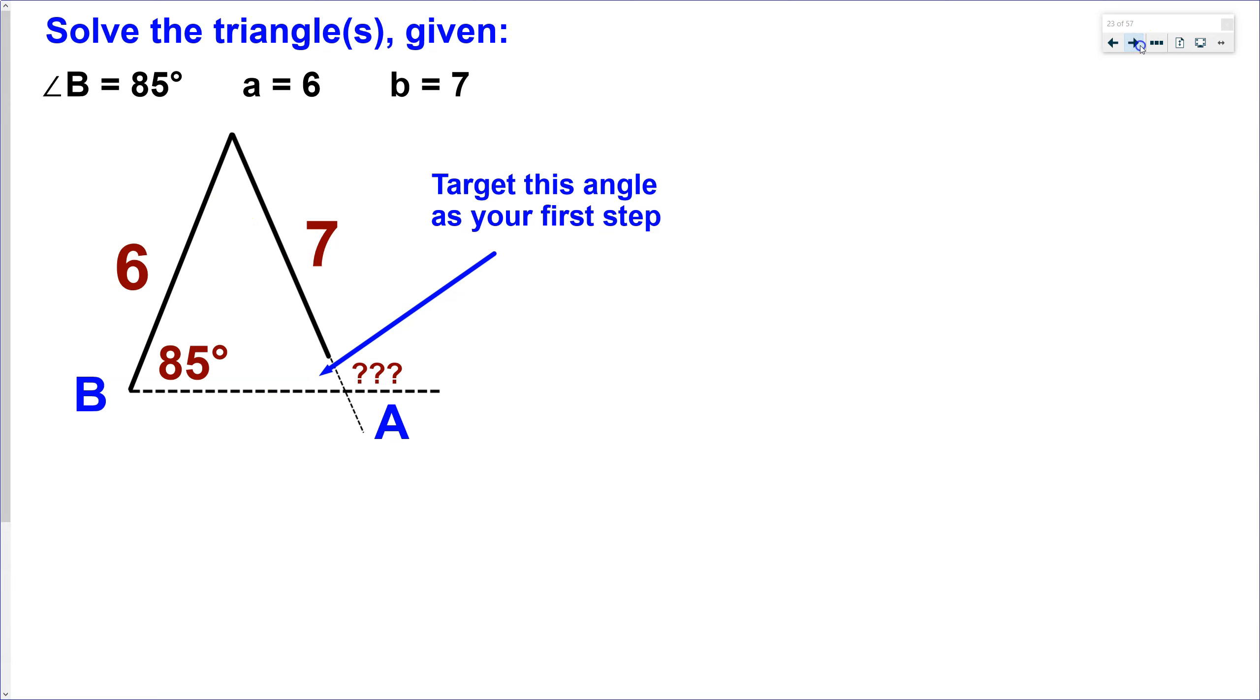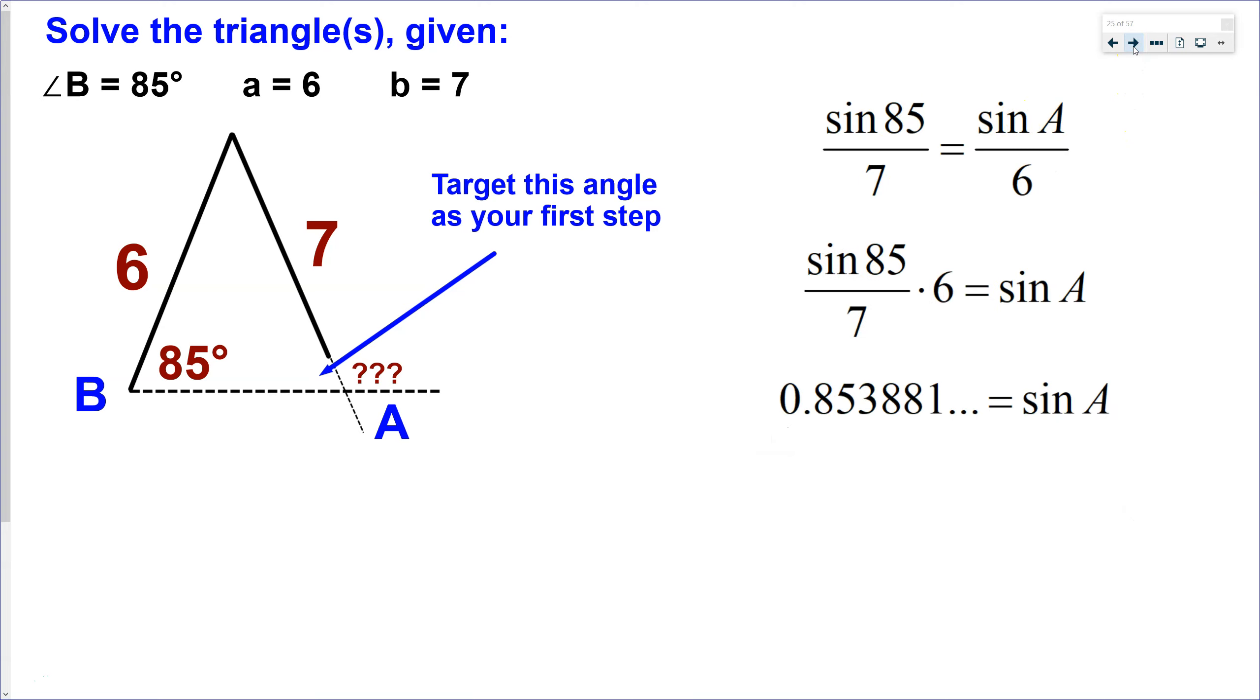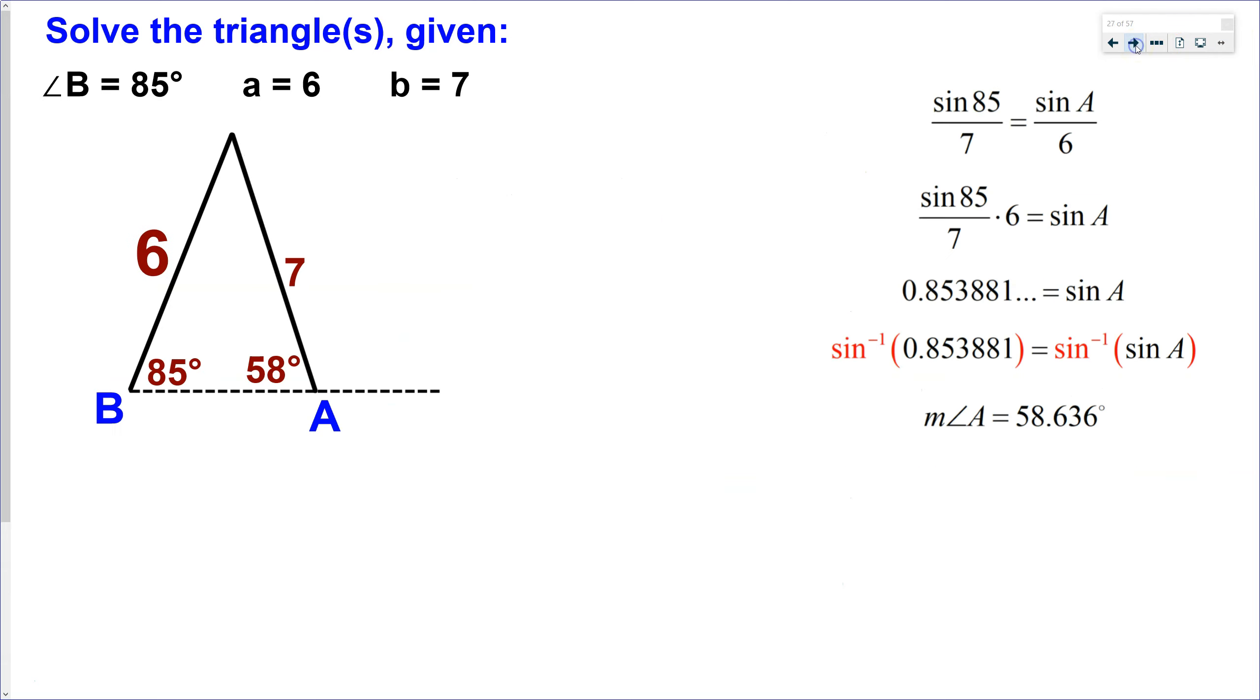So again, we're going to look at that angle, and we know everything about B, and we don't know everything about A. So we're going to write a law of sines proportion equation, just like that. So we're going to set it up, just like we did with the previous problem. We're going to go ahead and solve that thing. So multiply by 6, get a number, and now you'll notice that when we do the inverse sine to solve for the size of the angle, we actually get a solution. We find that this angle right here is 58.636.